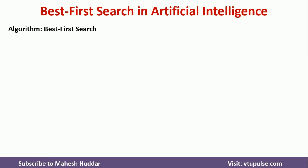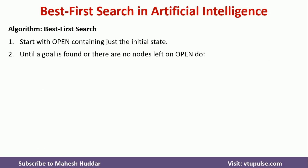Now we will see how the algorithm looks like and then go through a simple example. First, we put the initial state into open. In the second step, we repeat until the goal is found or there are no nodes left in open. If the goal is found, that is fine. If there are no nodes left in open, it means we were unable to reach the goal node. If either condition is satisfied, we come out of the loop; otherwise we perform these steps continuously.